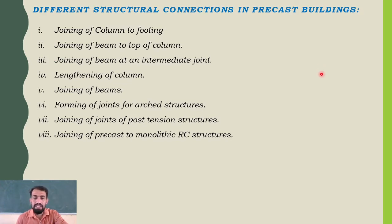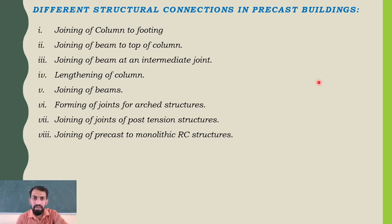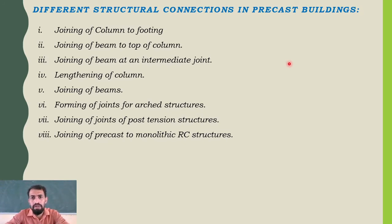Connections are the most important thing in prefabricated structures. A minute error or minute deviation in a structure means we could not be able to use the element if the structure is not good or the dimensions are not correct. So let us see some of the connections — different structural connections in precast buildings.